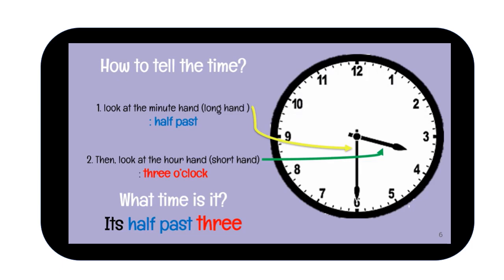So look — what's the time now? Look here: the short hand is at number 3, but it's half — separo. So we call it half, 30 minutes. Lebih 30 minutes dari pukul 3. So we call it half past 3. It's half past 3. Maksud dia, pukul 3, 30 minutes. It's half past 3. Good.